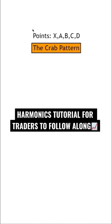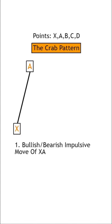In this one we'll be covering the crab pattern, which has 5 points in total. We start off with an impulsive move of X to A, in this case it's bullish.